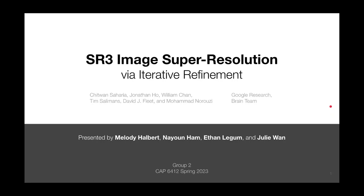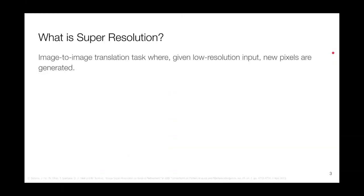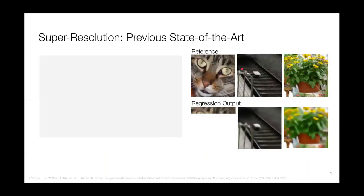Some information about this paper: it was published back in June 2021, which in the field of computer vision is already considered pretty old. But as you can see from the number of references and citations, it was a pretty foundational paper in the area of super resolution. So what exactly is super resolution? To put it simply, it's taking a low resolution input image and then generating new pixels based on the content of that image to increase the resolution of that image.